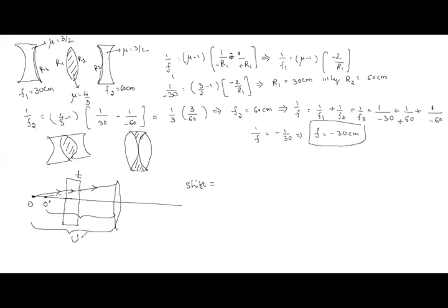Numerical example: focal length of lens = 20 centimeters, object at 40 centimeters. The apparent object distance is not 40 centimeters — it is 40 minus the shift. The shift formula for a glass slab is: shift = T × (1 - 1/μ).